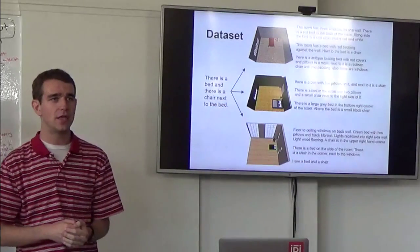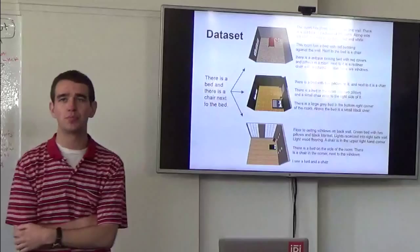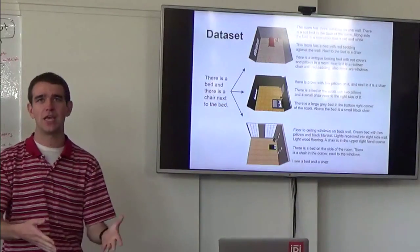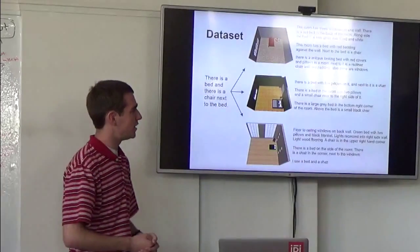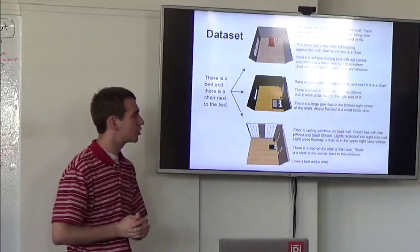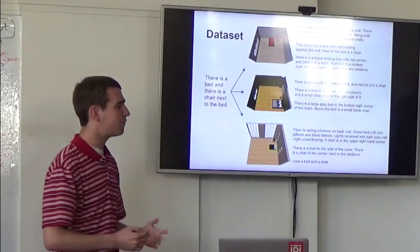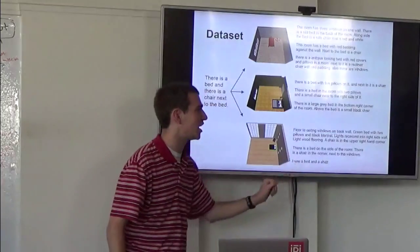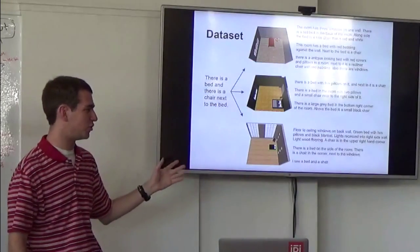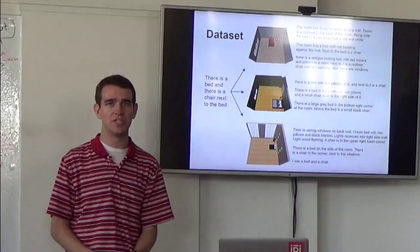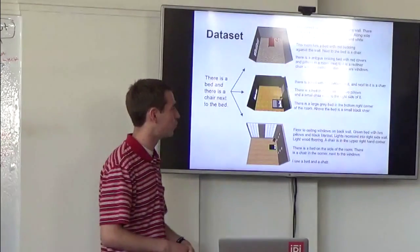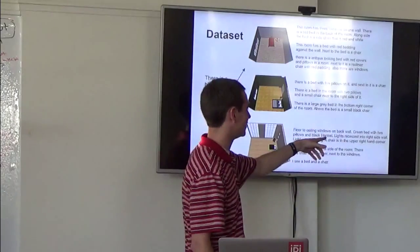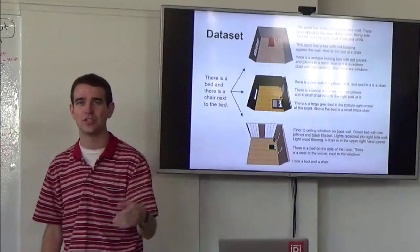We have some of these scenes. Then we want to turn around and get more realistic descriptions from them. Because as I said, the original kind of seed sentences were not very interesting. They're just like there's a table and a lamp. But if we ask some Mechanical Turk workers to describe these scenes for us, they often give us a lot more than just there's a table and a lamp. So this guy just says, okay, I see a bed and a chair. But some of these, you might find these passages like this in a home design manual or whatever. Floor to ceiling windows on the back wall. Green bed with two pillows and a black blanket. Lights recessed into the right side wall. And so on and so on.